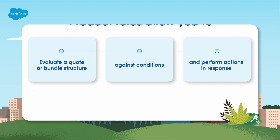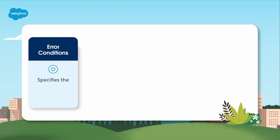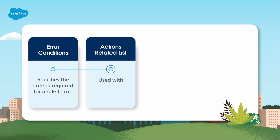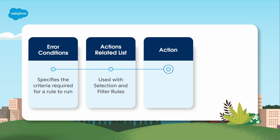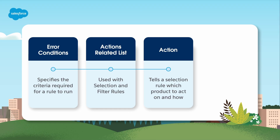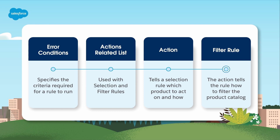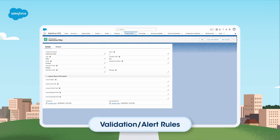Error conditions specify the criteria required for a rule to run. There are some use cases where error conditions are not necessary. The actions related list is used with selection and filter rules — with a selection rule, the action tells the rule which product it needs to act on and how. With a filter rule, the action tells the rule how to filter the product catalog.